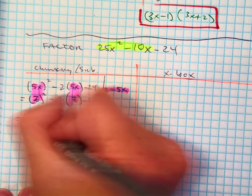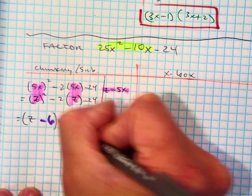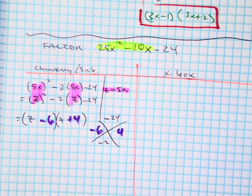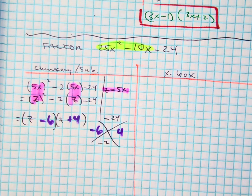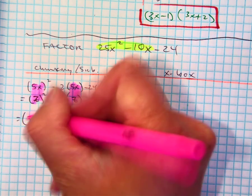So now I can write z minus 6, z plus 4. Are we done? No, we've got to do the substitution again.